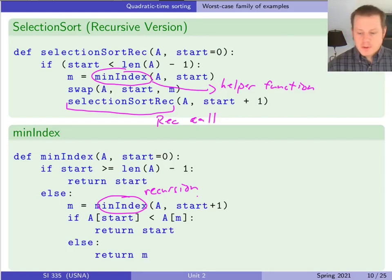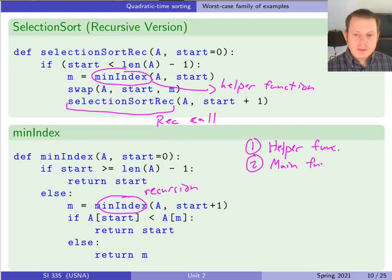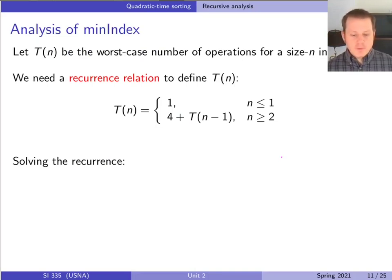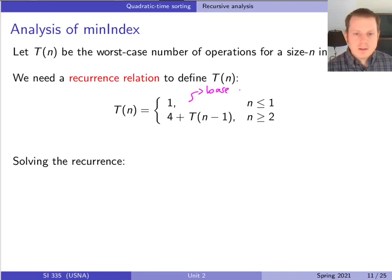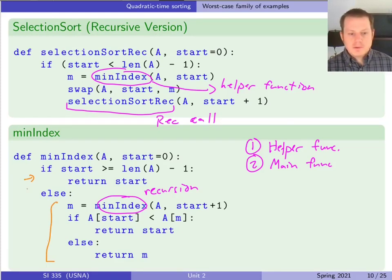The general roadmap is: first we analyze the helper function, do whatever we need to understand that recursively, and then solve a different recurrence for the main function plugging in the helper function cost. That way we don't have to deal with two recurrences at once. Let's start with min_index. Here's the recurrence relation we use to define T(n) — we have two cases: the base case, when the algorithm is done, and the recursive case. Looking back at min_index, the base case corresponds to the first branch and the recursive case to the else.